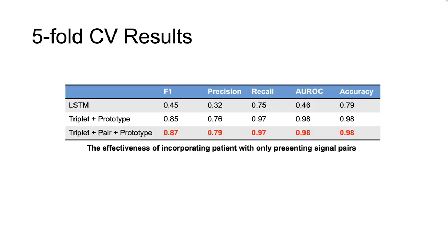Now we will present our results. We evaluate our framework based on five-fold cross-validation. We split the whole population into five parts. In each iteration, we use one fold of patient data for testing, and the rest for training. The first table analyzes the impact of including patients with only presenting samples.